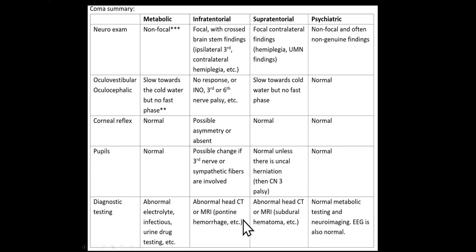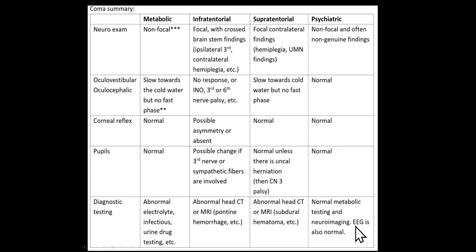For a supratentorial or infratentorial coma, we need neuroimaging — in an emergency room setting, a quick head CT, and possibly an MRI as a more sensitive test. In a psychogenic coma, all testing is normal, and an EEG can be helpful to show normal brainwave activity.